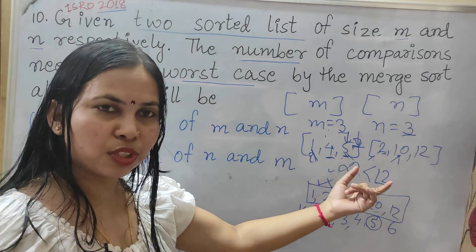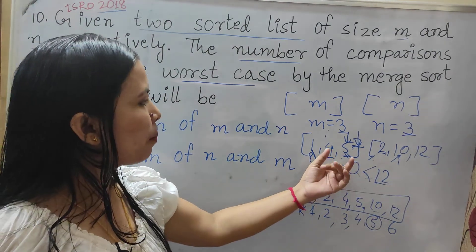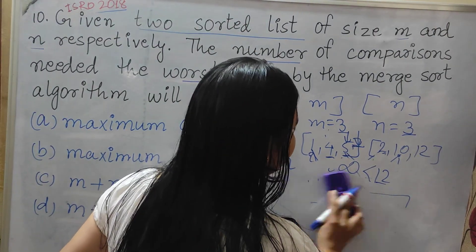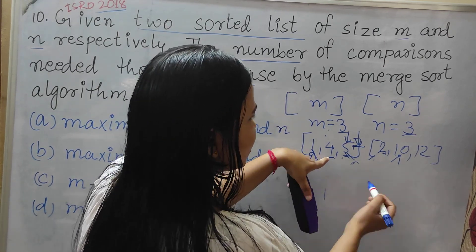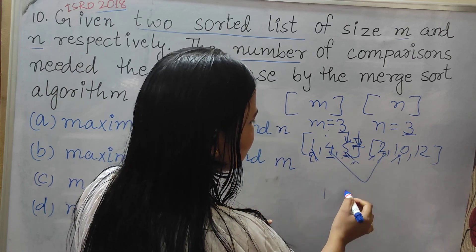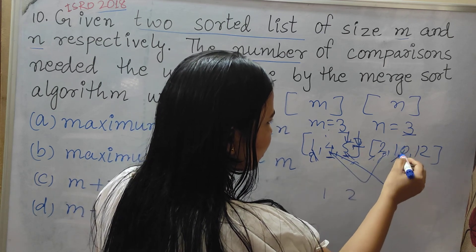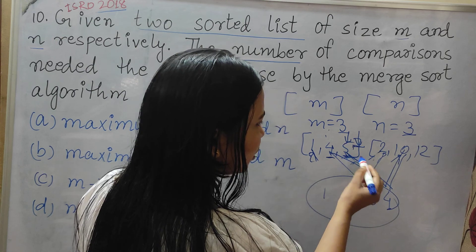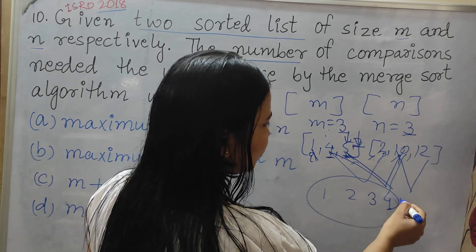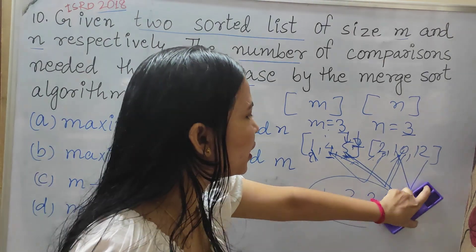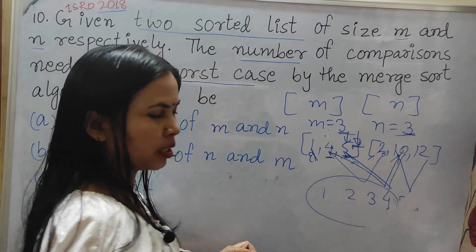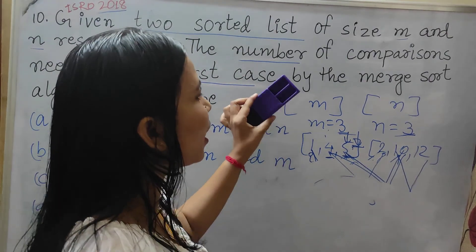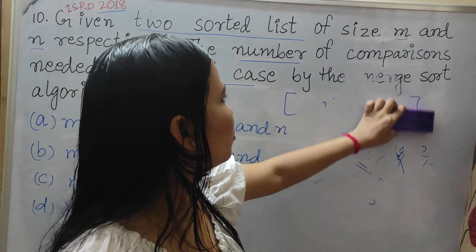But if you compare without using infinity — element by element: 1 less than 2 (1st), 2 less than 4 (2nd), 4 less than 10 (3rd), 5 less than 10 (4th), then 10 and 12 give the 5th and 6th elements. So how many times are we comparing? 5 times for 6 total elements. That is why whenever we sort an array, we compare minus 1 times — n elements gives n minus 1 comparisons.